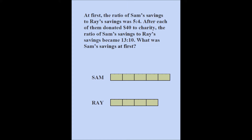Since the original ratio of Sam's savings was 5 to 4, I took 5 parts to represent Sam's amount and 4 parts to represent Ray's amount. Each of the 4 parts of Ray is the same size as each of the 5 parts of Sam. That's what ratio means — 5 to 4 means 5 parts belong to Sam and 4 parts belong to Ray, and all parts are the same size.